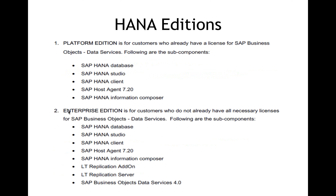The Enterprise Edition is also for existing SAP customers — specifically those who do not already have Business Objects, Data Services, and SLP licenses, which are bundled in this edition. You get the SAP HANA database, Studio client, Host Agent, Information Composite, along with the LT Replication Add-on, LT Replication Server, and SAP Business Objects Data Services 4.x. Remember, both the Platform Edition and the Enterprise Edition are for existing SAP customers only.